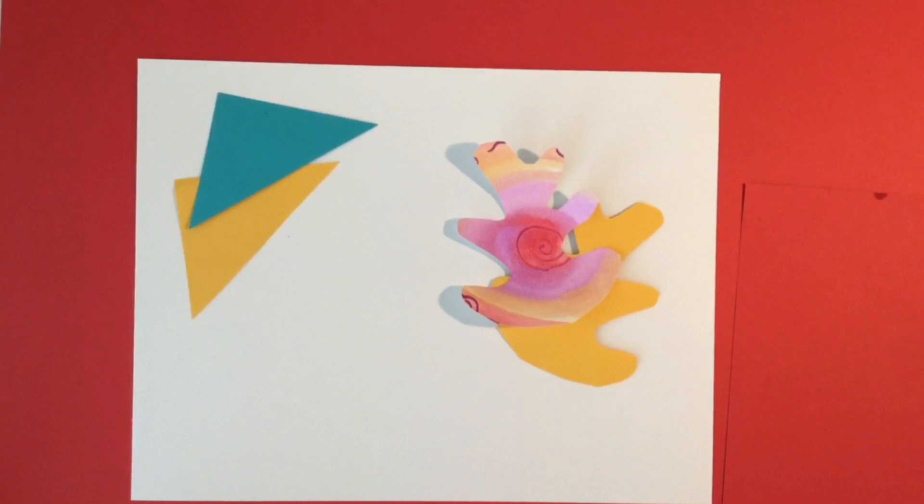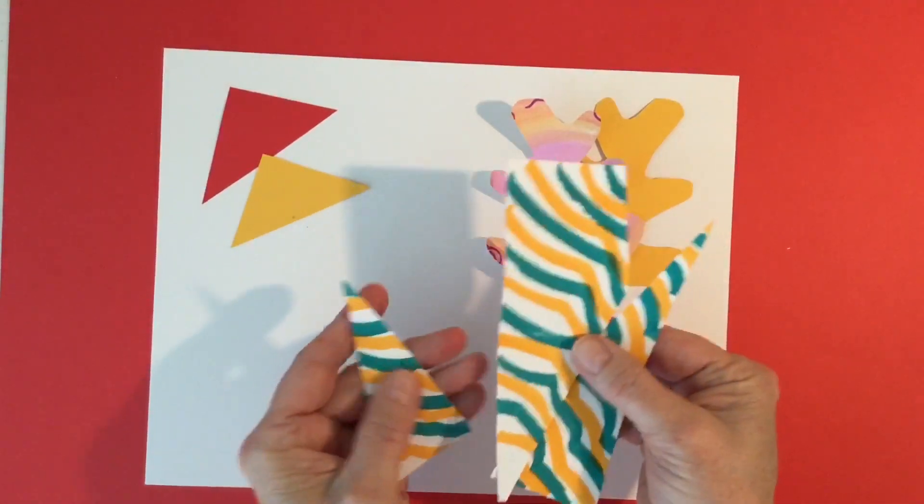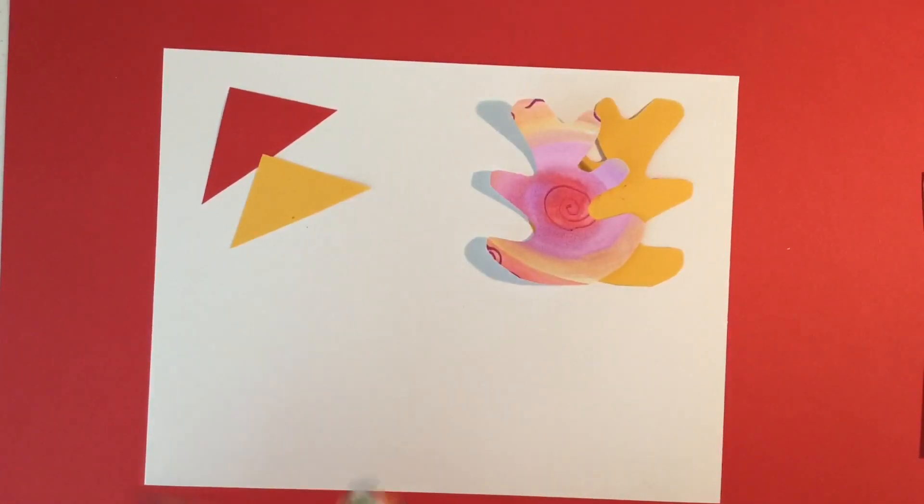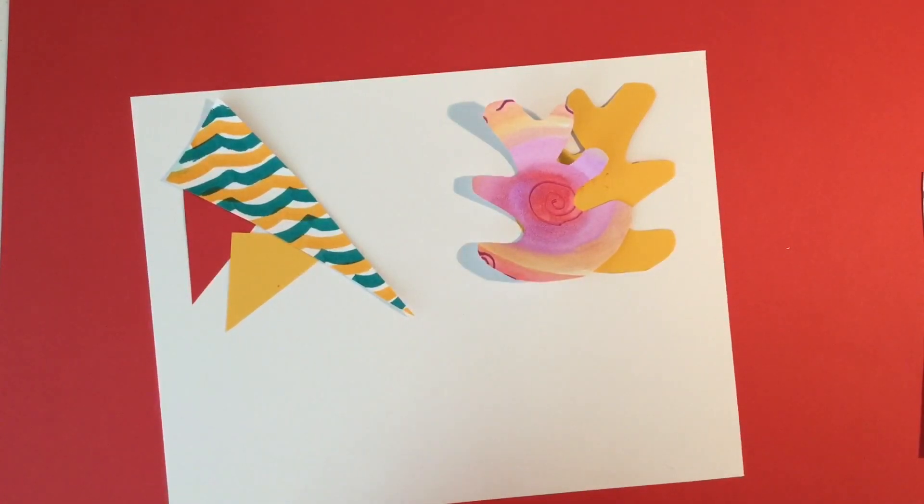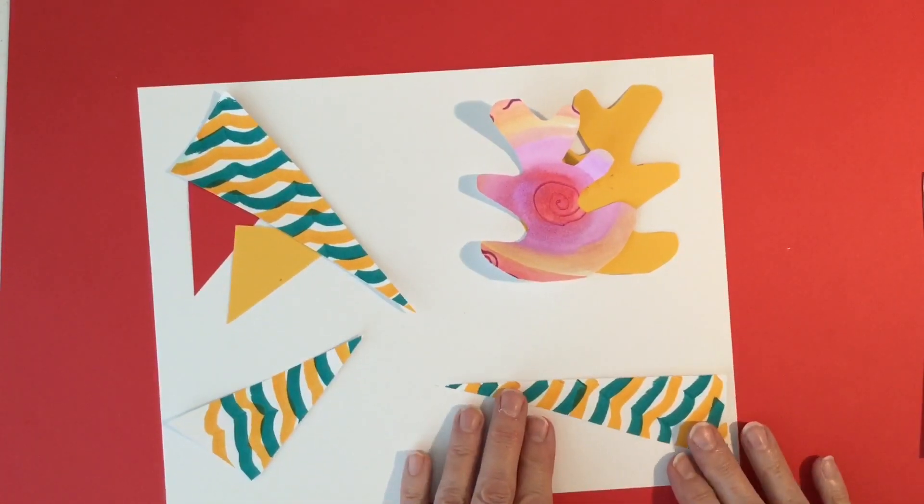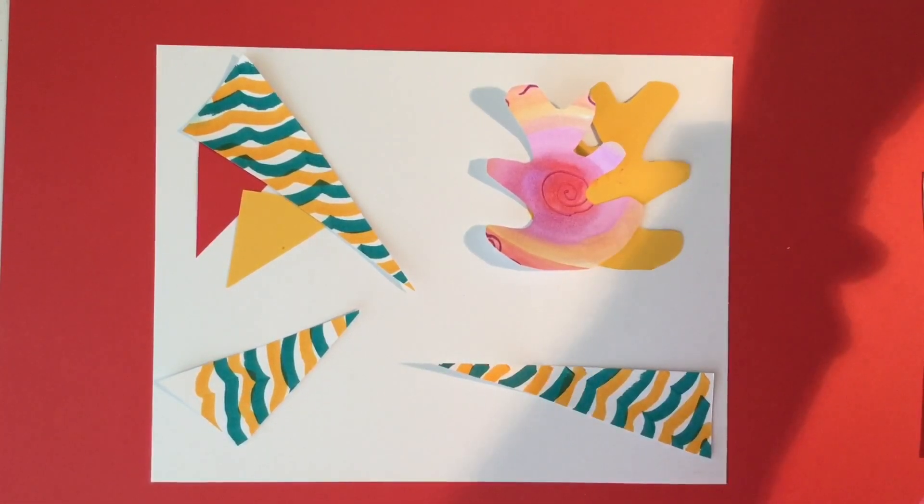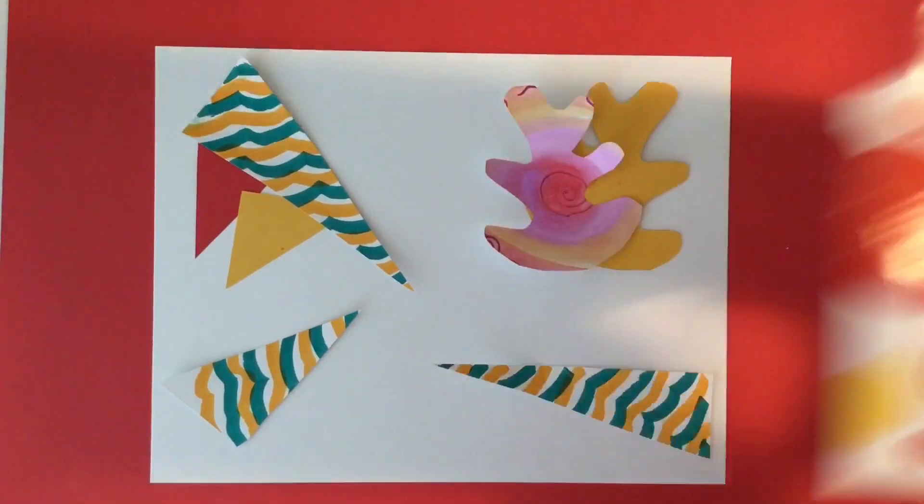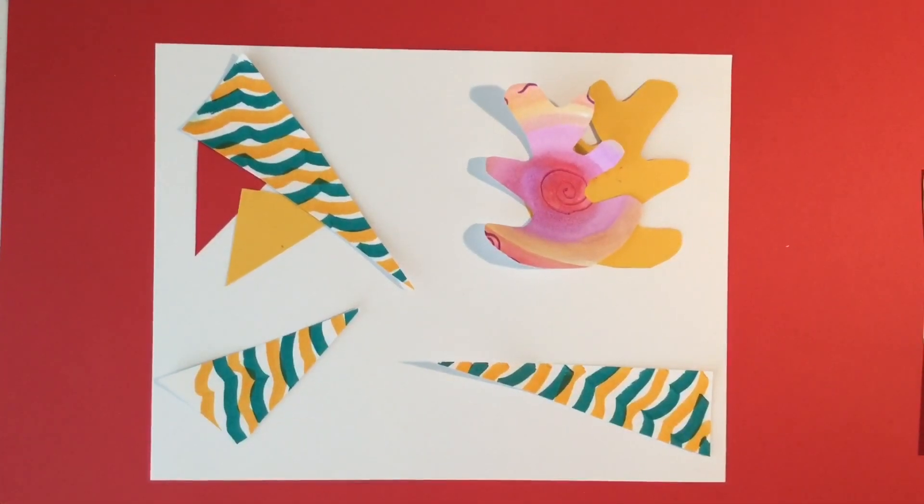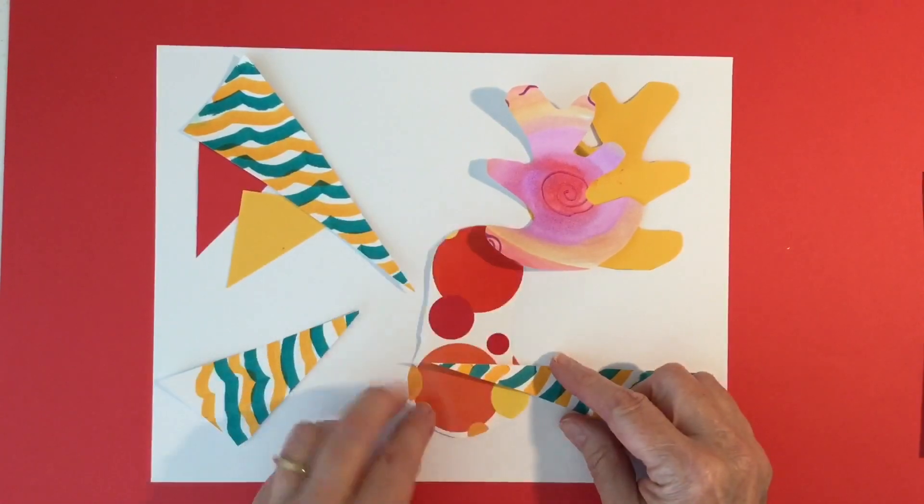Now it's time to decide how you want to make your collage. Do you remember this paper? I cut it into long triangles. I can even cut my gift wrap paper. Oh, look what I cut out here. I like that. I'm going to put that here.